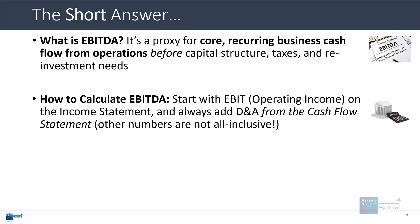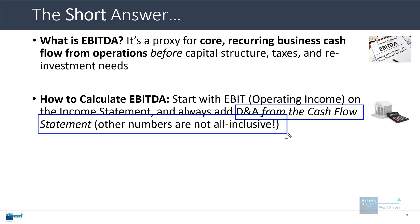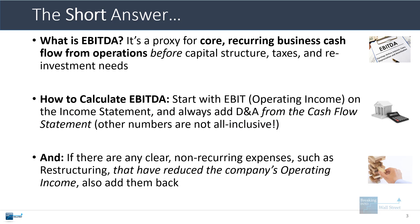To calculate EBITDA, you want to start with EBIT, or operating income on the income statement, and then you always add the depreciation and amortization from the cash flow statement. You do this because the D&A on the cash flow statement is the all-inclusive number, and it reflects spending from a prior period — cash outflows from a prior period that are being recognized over a long period of time, but which is not actual spending in this period. You also adjust for any clear non-recurring expenses, such as restructuring, that have directly reduced the company's operating income, and you add them back.